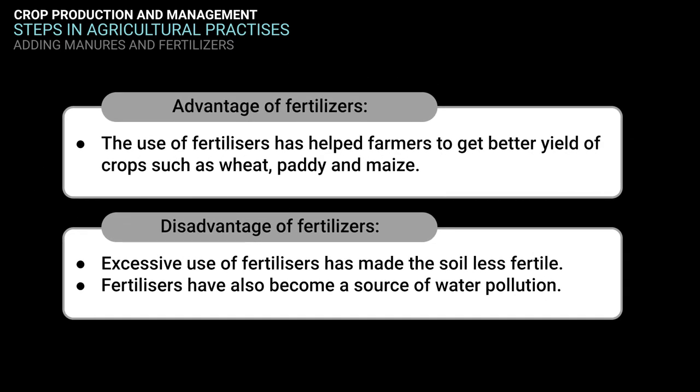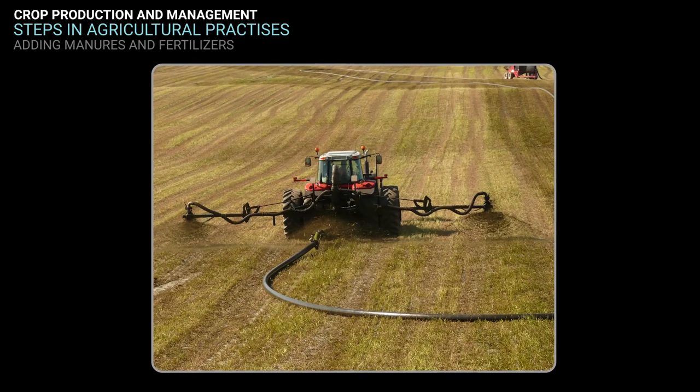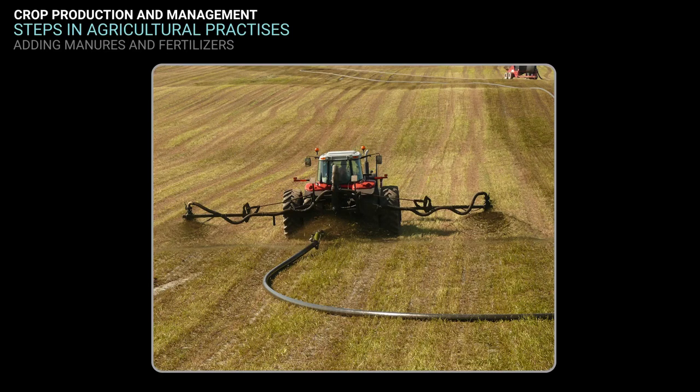The use of fertilizers has helped farmers get better yields of crops such as wheat, paddy, and maize. However, excessive use of fertilizers has made the soil less fertile and has also become a source of water pollution. To maintain the fertility of the soil, we have to substitute fertilizers with organic manure or leave the field uncultivated between two crop seasons. The use of manure improves soil texture as well as its water retaining capacity.